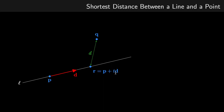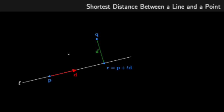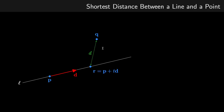As we change the value of T, the point will move along the line to be a different point on the line. If T is one value, the distance — denoted as little d — is a certain length. T could be a different value, and you can see that distance is actually shorter. If I increase T a bit more, the distance increases. So we've got three distances.